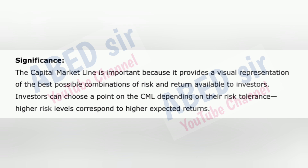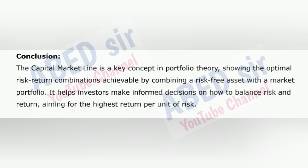Significance: The capital market line is important because it provides a visual representation of the best possible combinations of risk and return available to investors. Investors can choose a point on the CML depending on their risk tolerance — higher risk levels correspond to higher expected returns. Conclusion: The capital market line is a key concept in portfolio theory, showing the optimal risk-return combinations achievable by combining a risk-free asset with a market portfolio. It helps investors make informed decisions on how to balance risk and return, aiming for the highest return per unit of risk.